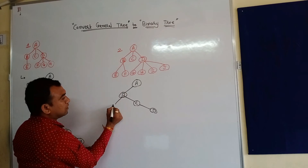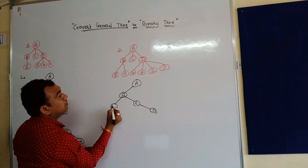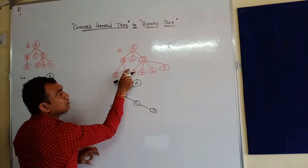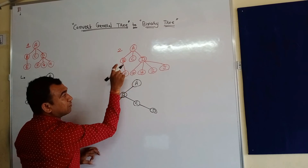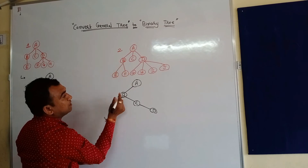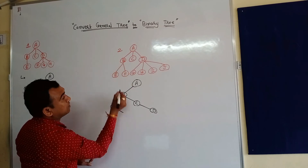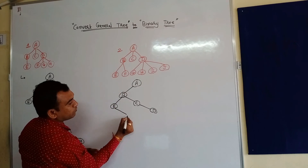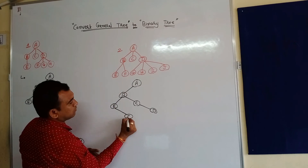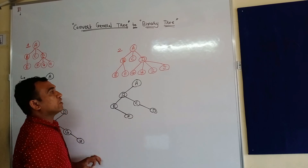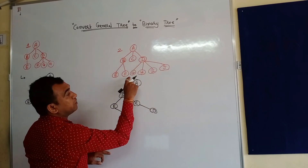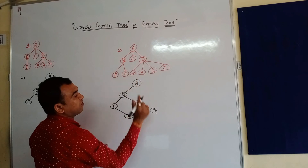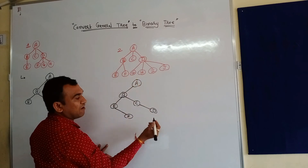Now we come to B node. B has two children; the first child becomes the left child of B, and the remaining node becomes the right node of each other — so E's right node is F. Then we come to D node, which has four children; the first child G will be the left child of D.